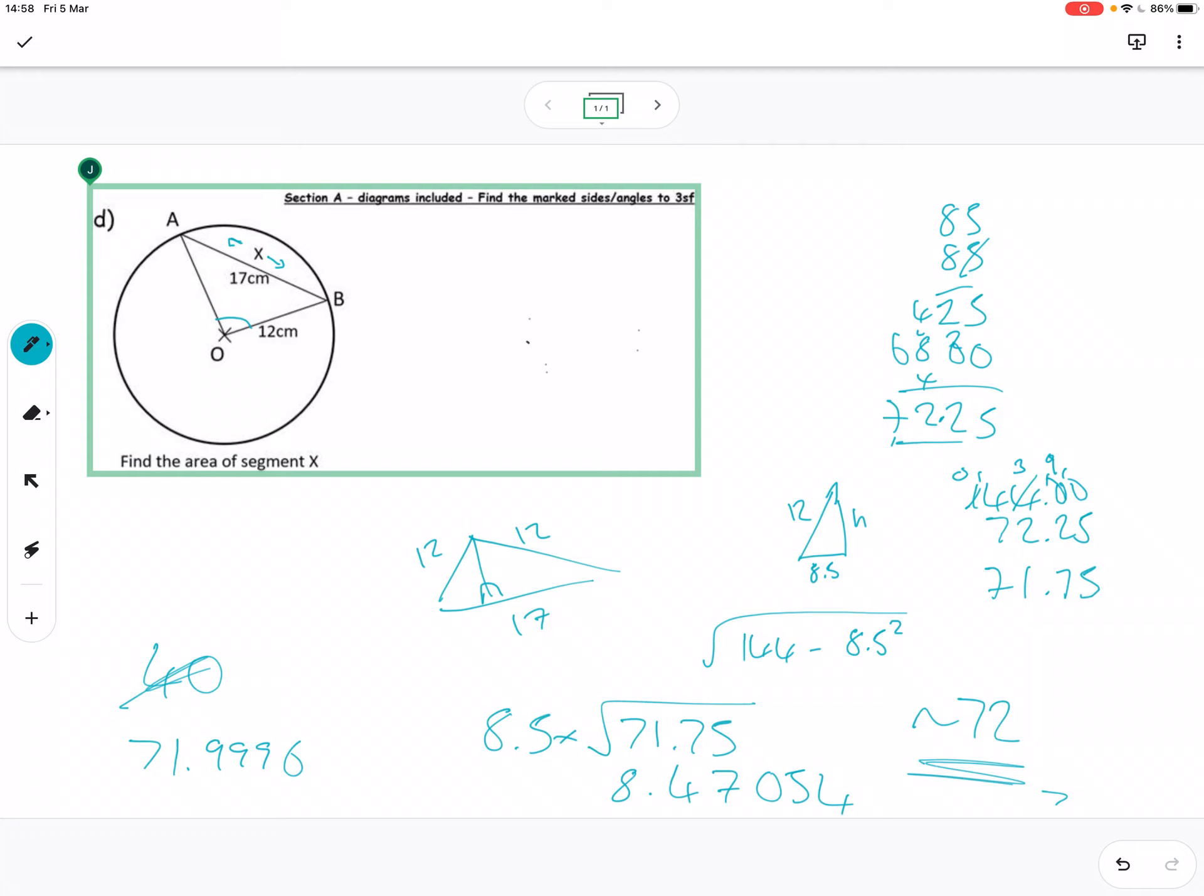So yeah, it's 72, isn't it? 72, like, centimetres squared. Tip top.